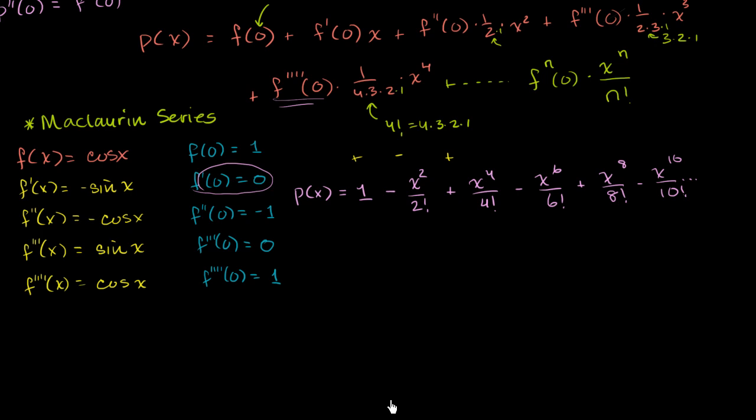In the last video, we took the Maclaurin series of cosine of x. We approximated it using this polynomial and we saw this pretty interesting pattern. Let's see if we can find a similar pattern if we try to approximate sine of x using a Maclaurin series.